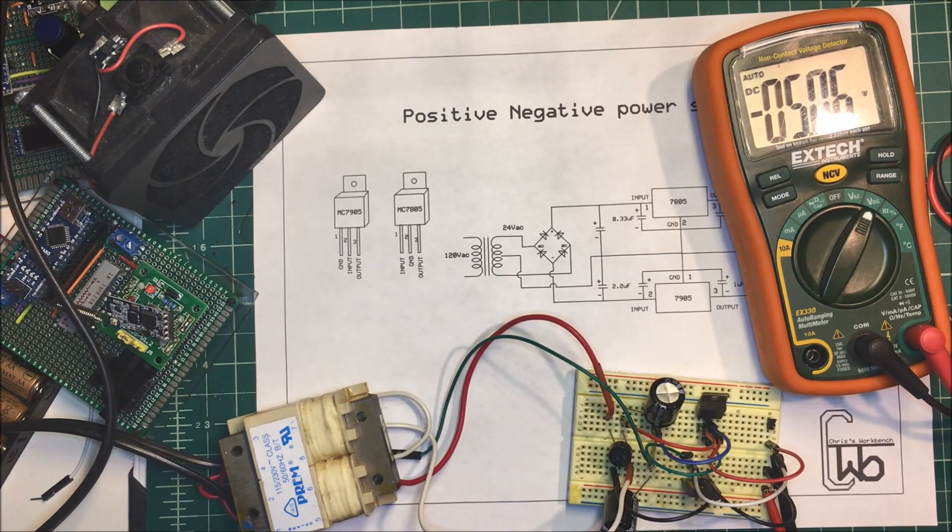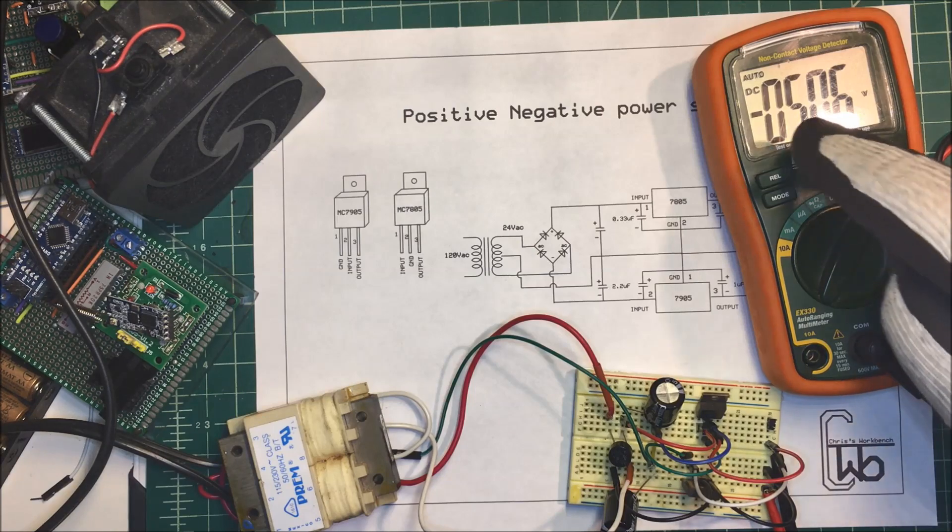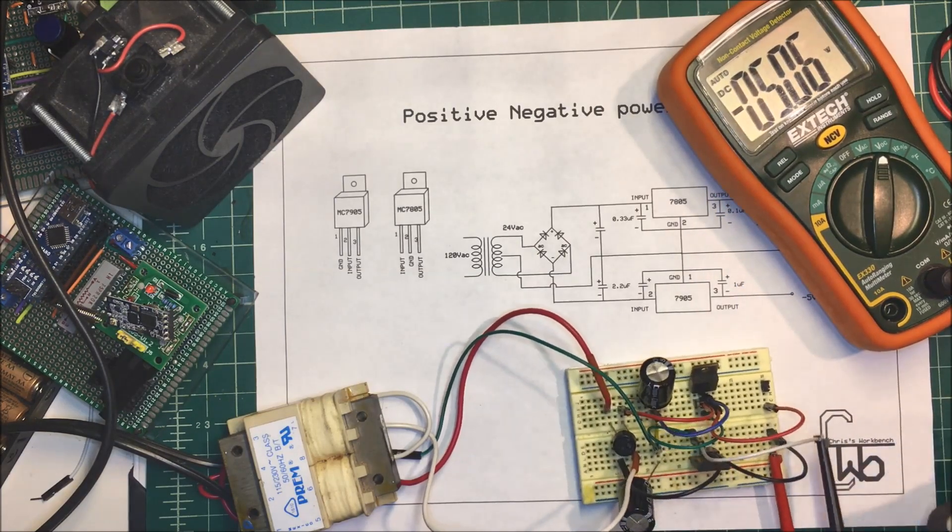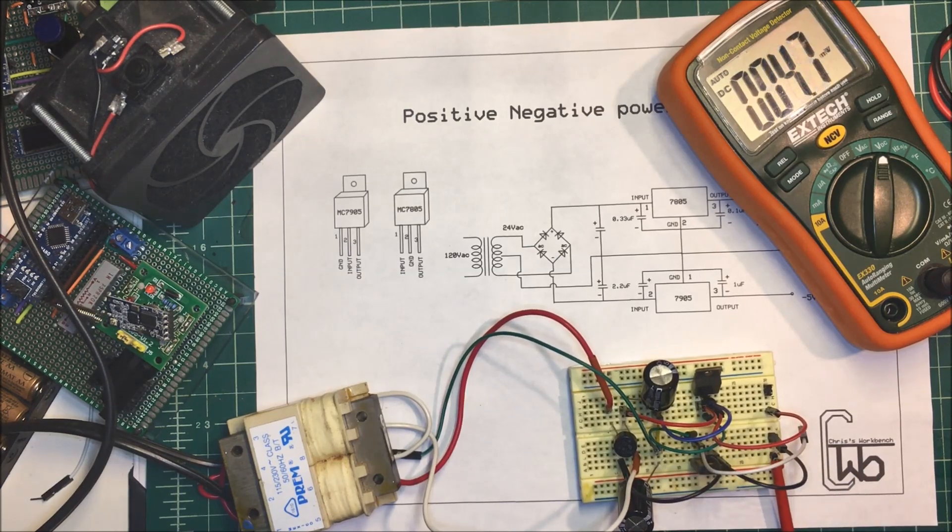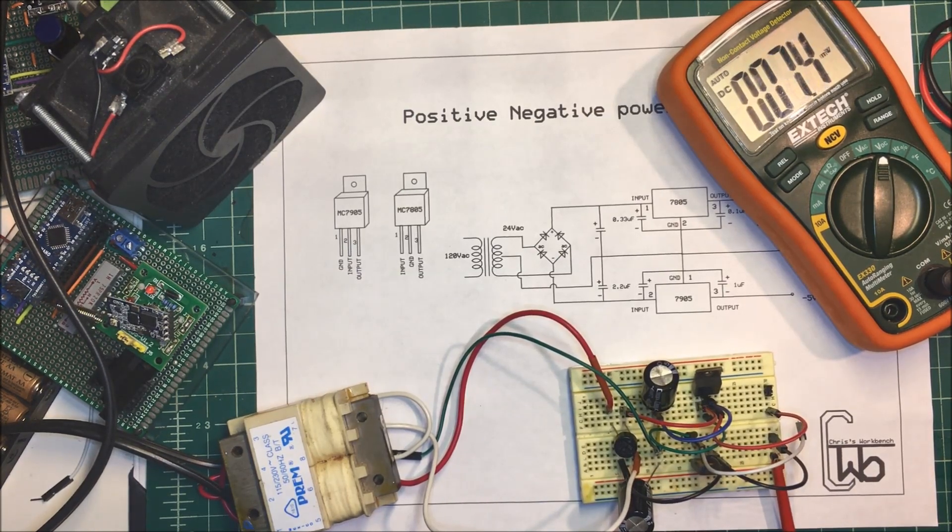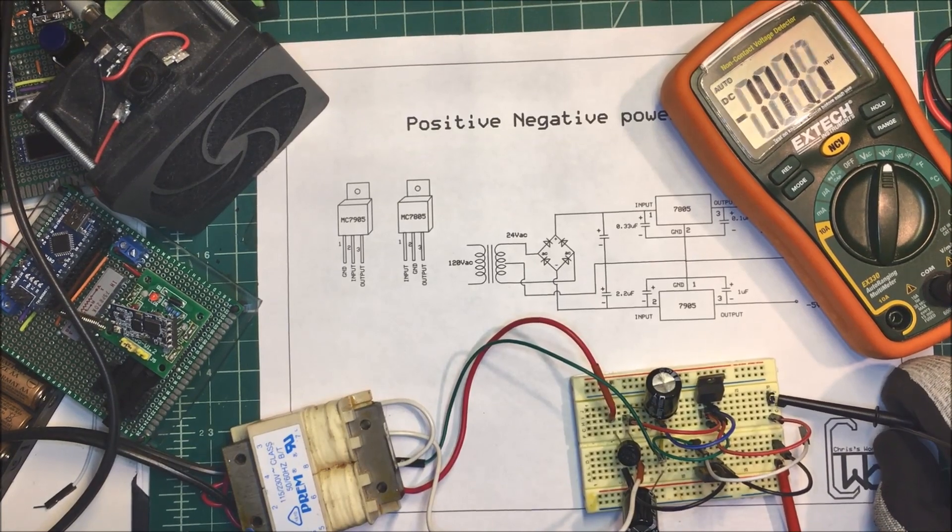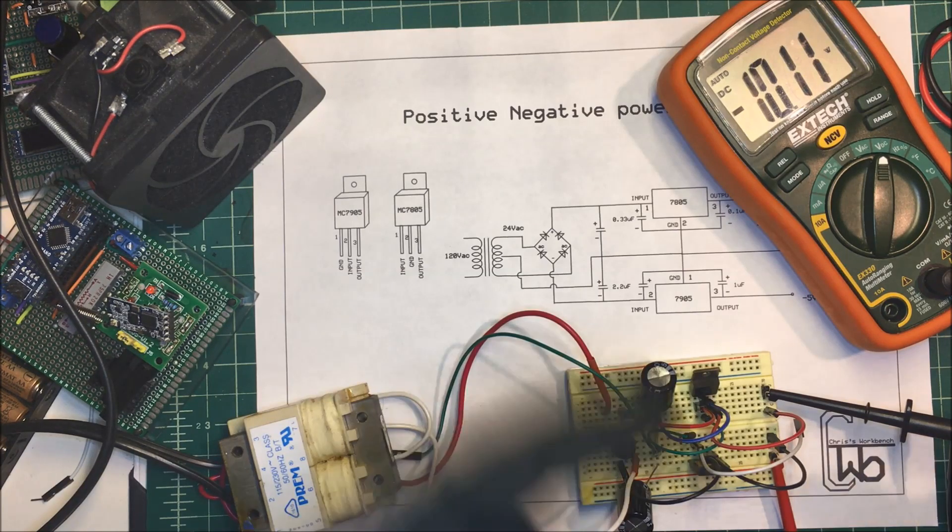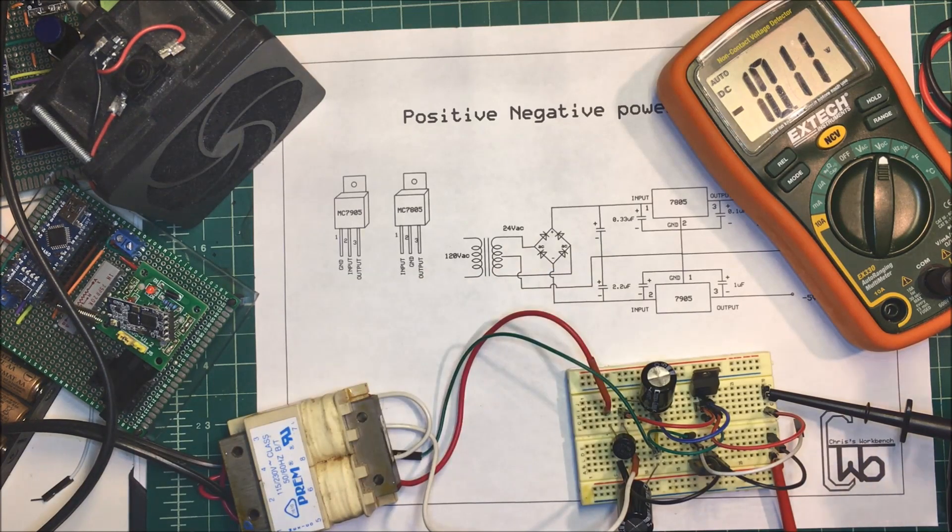And I have 5.06 volts on the negative voltage on that side. And then let's go from rail to rail here and see what we get—10.1 volts.